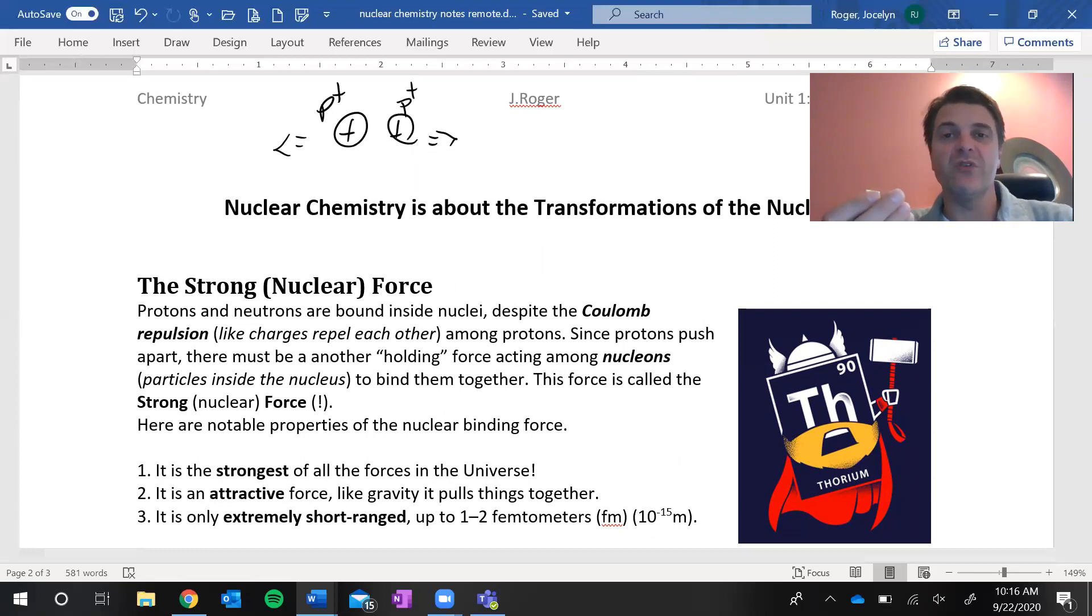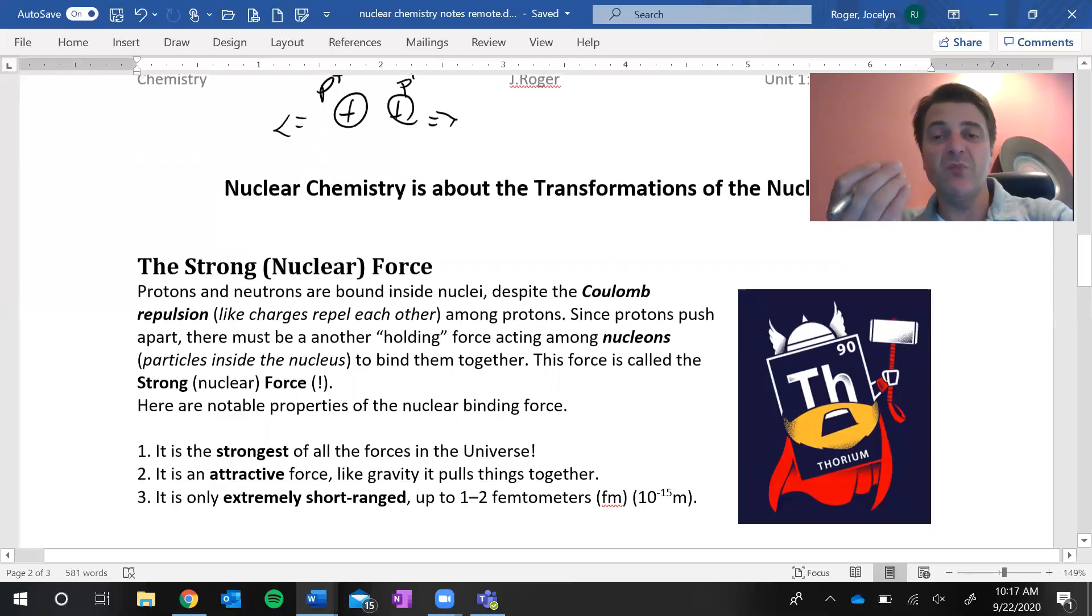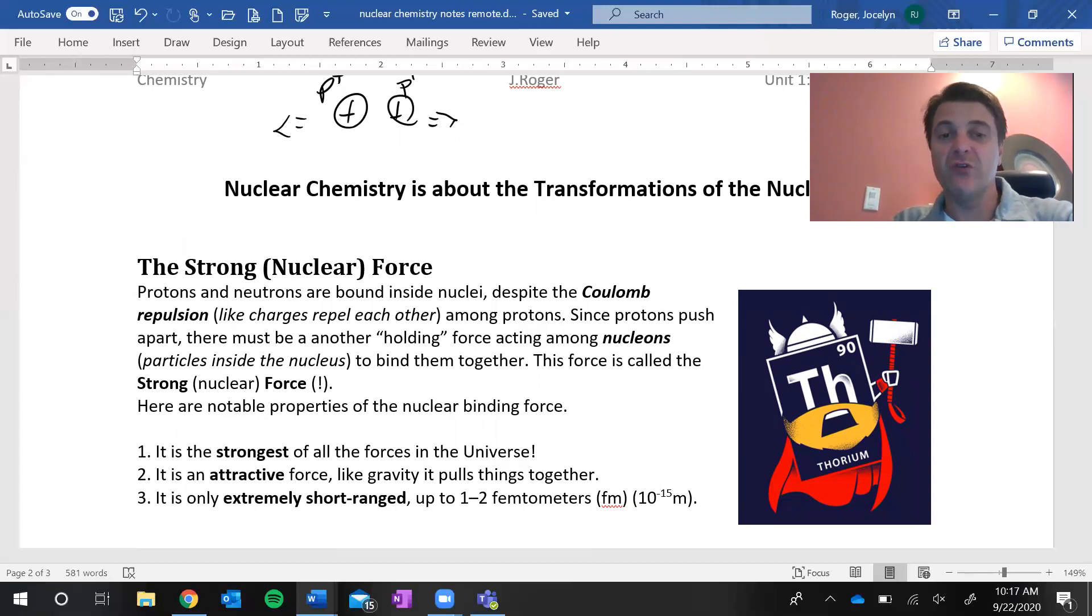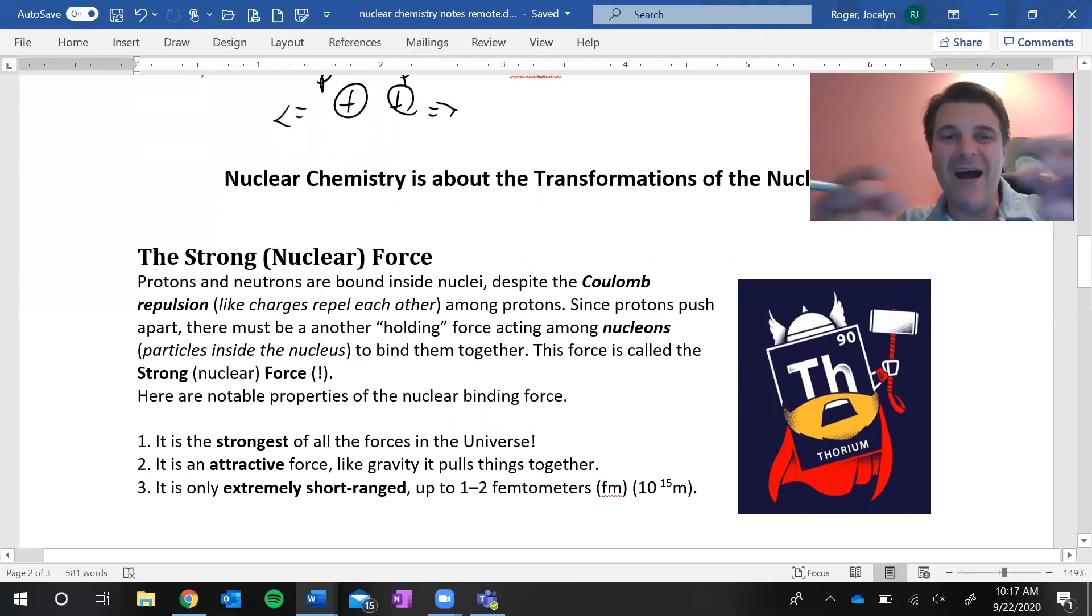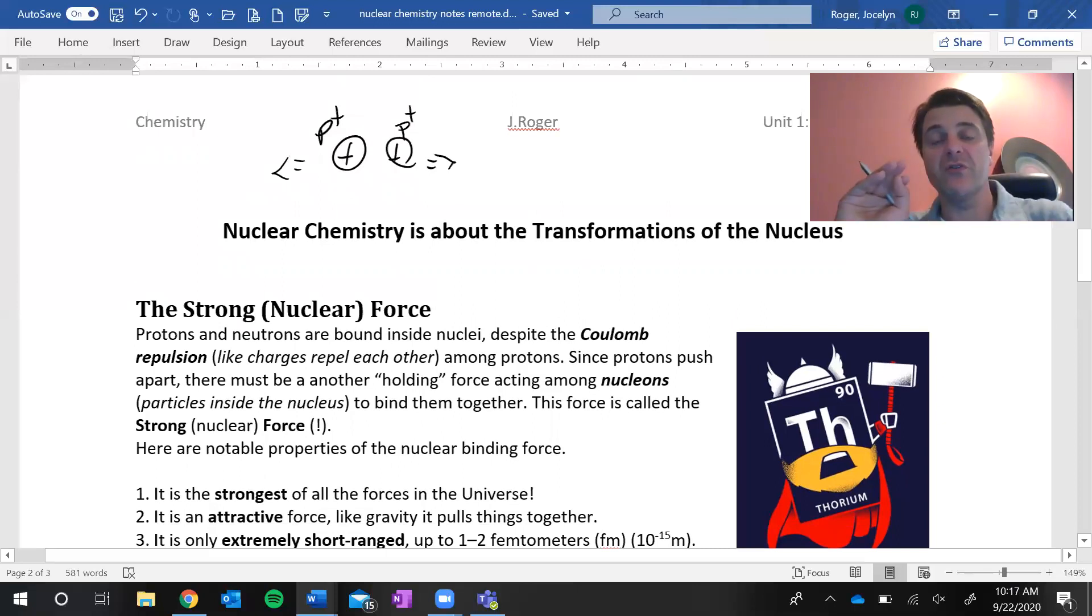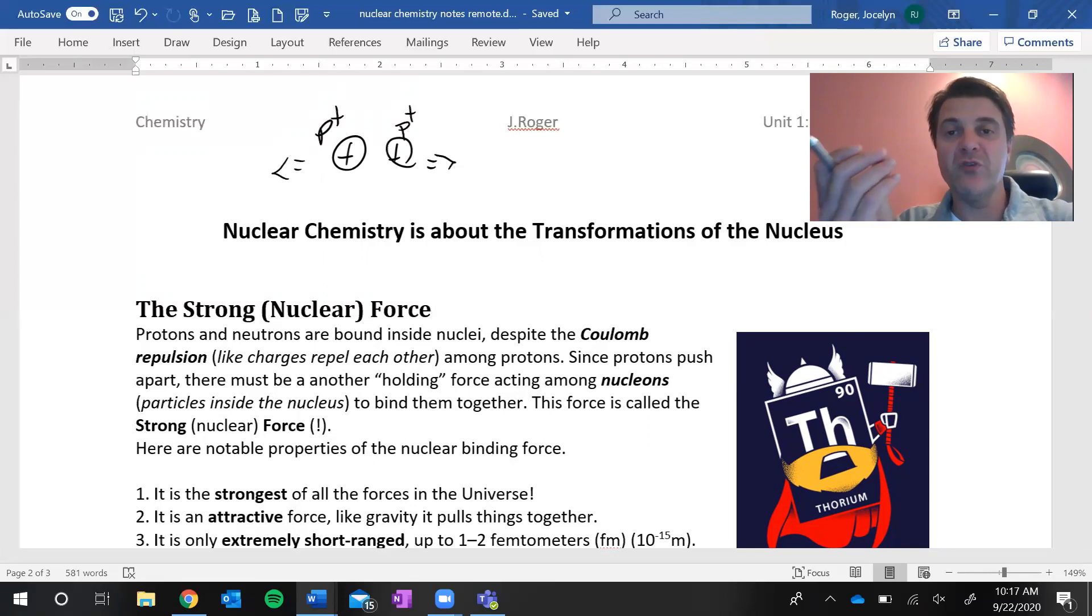This is where the strong force comes into play. In the nucleus of atoms, because the distance between the particles in the nucleus is so small, there is a force of attraction there which is immensely powerful. This is called the strong force. The strong force is a holding force, it binds things together like gravity, so it's strictly pulling. Whereas the electrostatic force, in the case of two protons, is a repulsion force. So we have a repulsion from the electrostatic force and we have an attraction from the strong force, generated by the presence of neutrons.